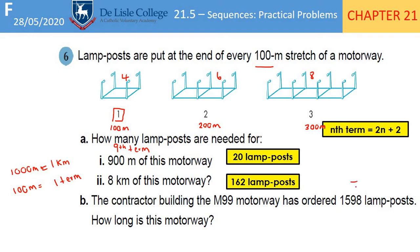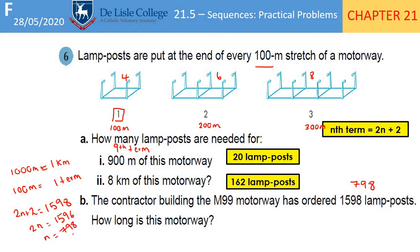For 8 kilometres of motorway: 1000 metres equals 1 kilometre, and 100 metres is one term. So 1 kilometre is 10 terms, meaning 8 kilometres is 80 terms. Substitute 80 in: 2 times 80 is 160, plus 2 is 162 lamp posts. The most common incorrect answer for the next part is to substitute the number of lamp posts directly. Instead, write 2n + 2 = 1598, subtract 2 and divide by 2 to get n = 798. But the question asks how long the motorway is, and one term is 100 metres, so multiply 798 by 100: the answer is 79,800 metres, or 79.8 kilometres.